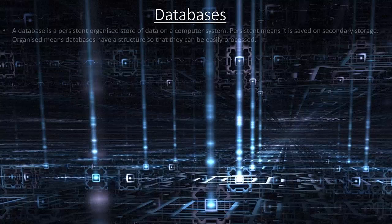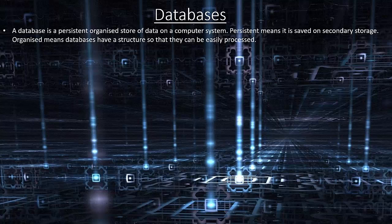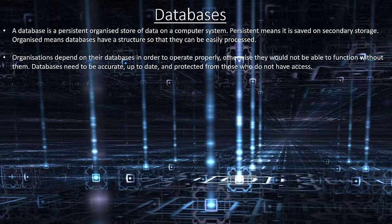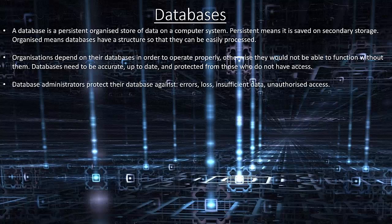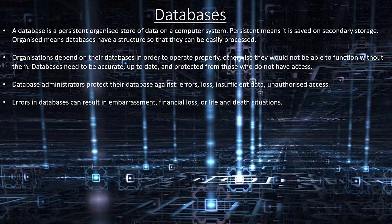Databases. A database is a persistent, organised store of data on a computer system. Persistent means it is saved on secondary storage. Organised means databases have a structure so that they can easily be processed. Organisations depend on databases in order to operate properly. Databases need to be accurate, up-to-date, and protected from those who do not have access. Database administrators protect their database against errors, loss, insufficient data and unauthorised access. Errors in databases can result in embarrassment, financial loss or life and death situations.